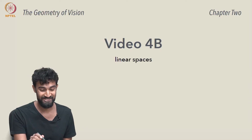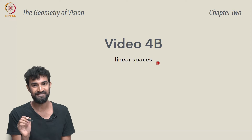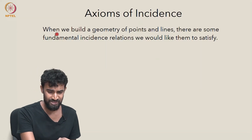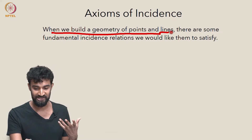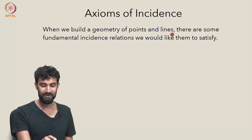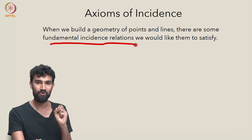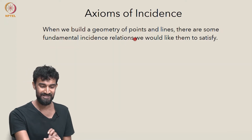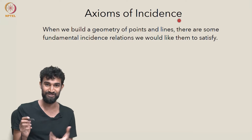There's another fundamental concept we're going to need, known as a linear space. We're trying to build a geometry of incidence, a geometry of points and lines. There are some very fundamental incidence relations that we want to make sure these points and lines satisfy — certain basic axioms of incidence.